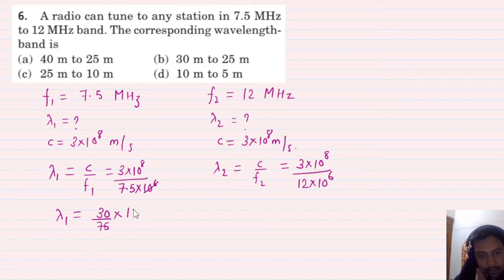Lambda 2 is equal to 10 to the power 2 after cancellation, and 3 goes into 12 four times, so 100 by 4. This gives us 25 meter. We got this one.